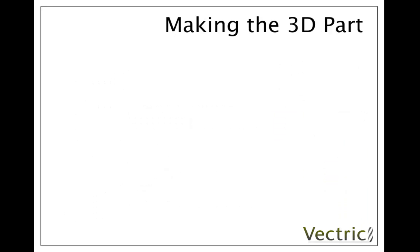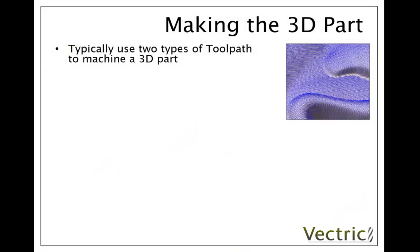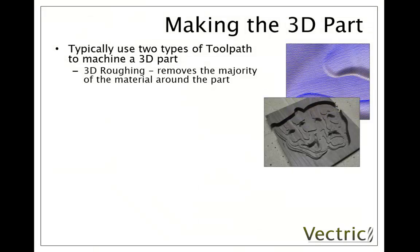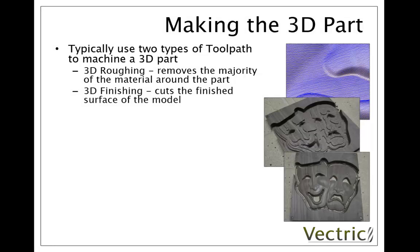The most common approach to machining a 3D object in the software is to use two types of toolpaths. You're going to start with what we refer to as 3D roughing, which is used to remove the majority of the material around the part. Typically it uses a larger tool with fairly loose settings so that we're taking a lot of material on each cut. We're also going to keep that slightly away from our finished object to make sure we've got some material left for the second type of toolpath — the 3D finishing.